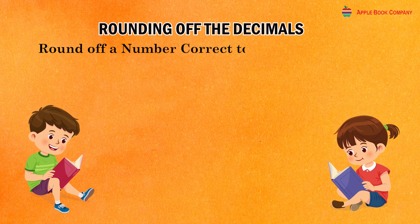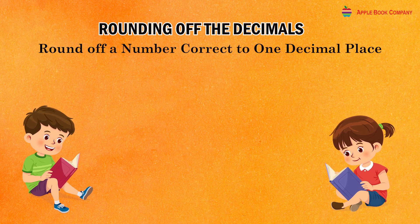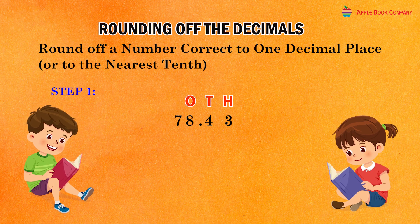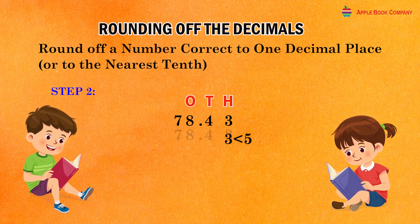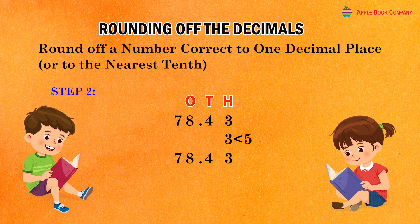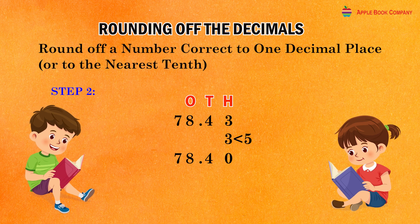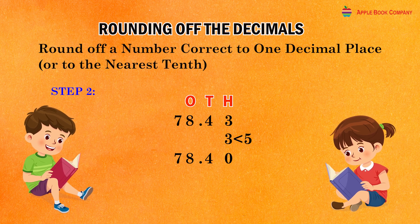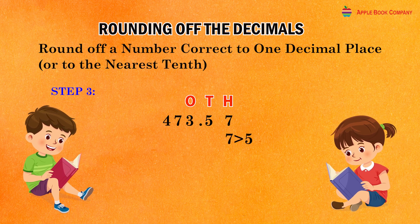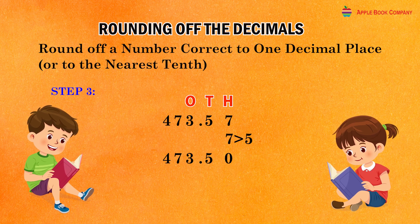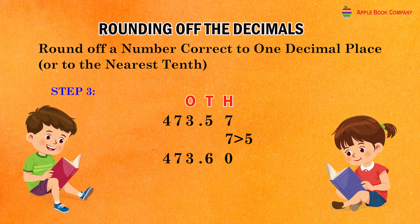Rounding of a number correct to one decimal place or to the nearest tenth. Check the digit at the second decimal place. If the digit at the second decimal place is less than 5, replace each one of the digits right to the second decimal place and onwards by zero and keep all the digits before it as they are. If the digit at the second decimal place is 5 or greater than 5, replace every digit after it along the right side by zero and increase the digit at the first decimal place by one.